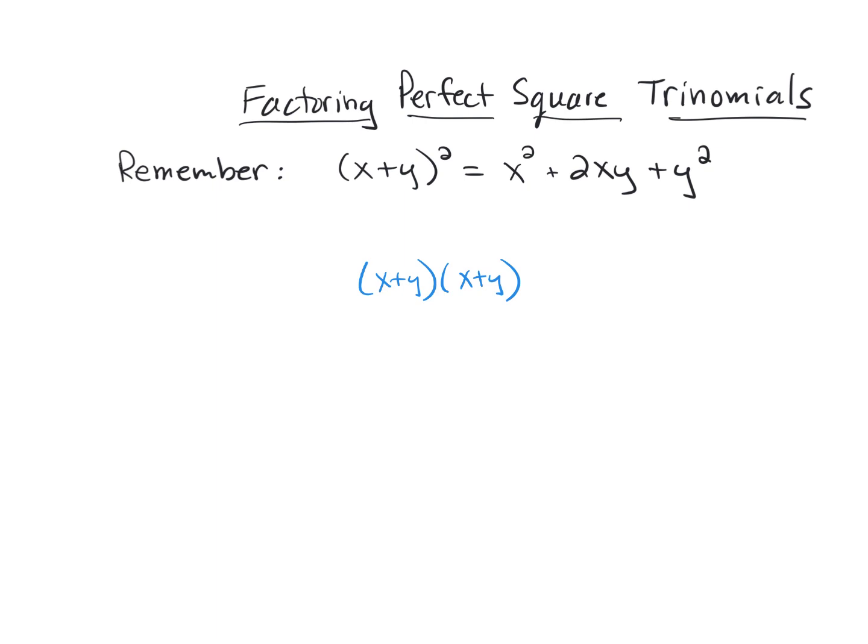So if I do that, my F gives me x², my O gives me xy, my I gives me xy, and my L gives me y². So I end up with x² + 2xy + y², which is what I have written up here.